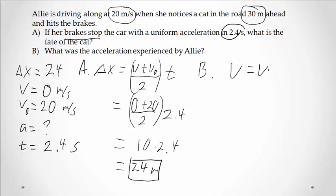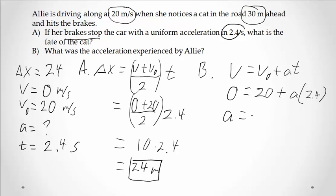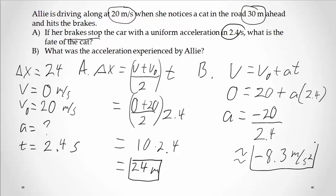V equals v naught plus at. Final velocity is zero. Initial velocity is 20. Acceleration is what we're solving for. And the time is 2.4. So we're going to get acceleration equals negative 20 divided by 2.4. You throw that in your calculator, you get 8.3 repeating. So approximately negative 8.3 meters per second squared.